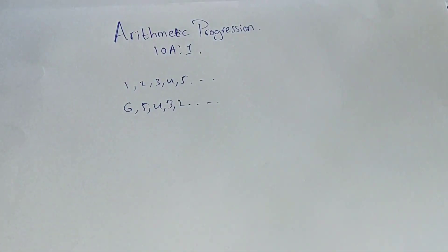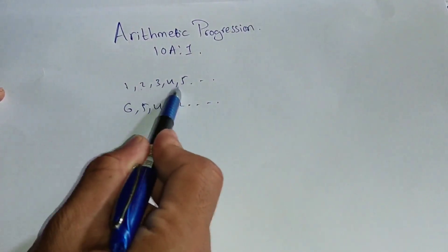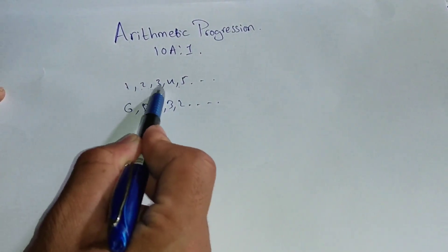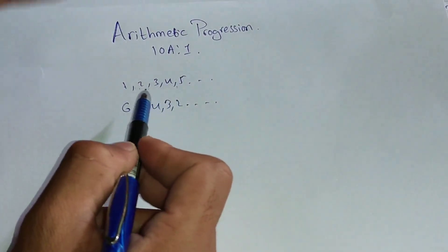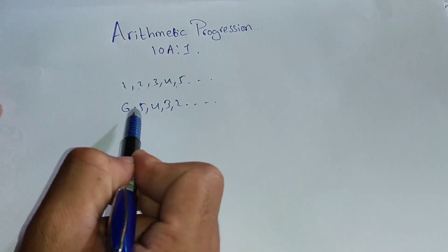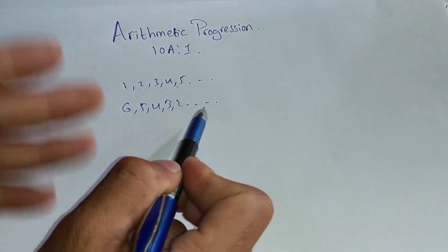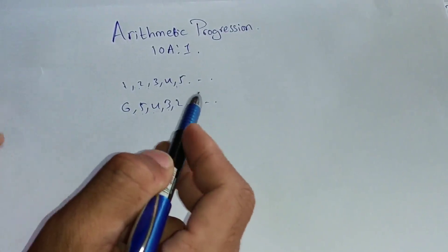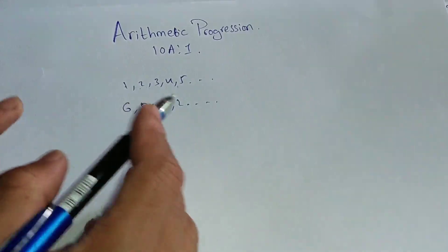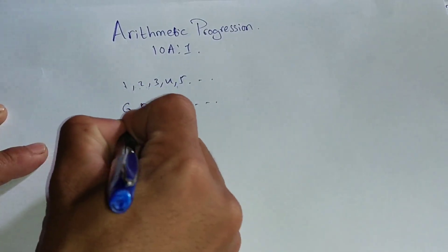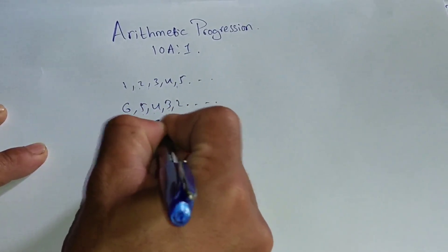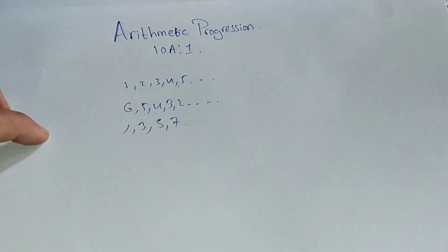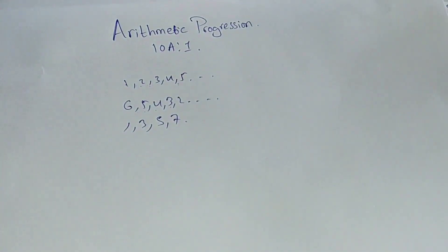Arithmetic progression is having a common difference. For example: 1, 2, 3, 4, 5 — there is a difference of 1 between each term. Similarly, 6, 5, 4, 3, 2, 1 — there is also a common difference of 1. So when numbers are rising or falling with a common difference, it is known as arithmetic progression.